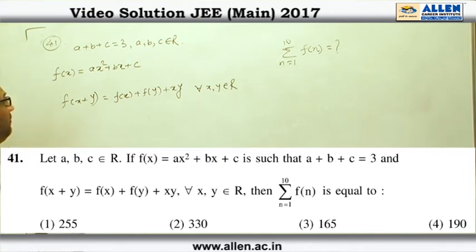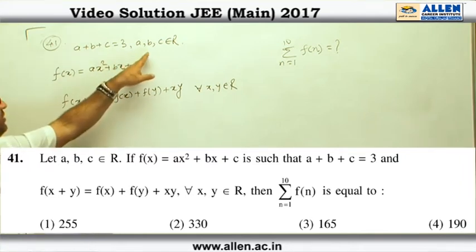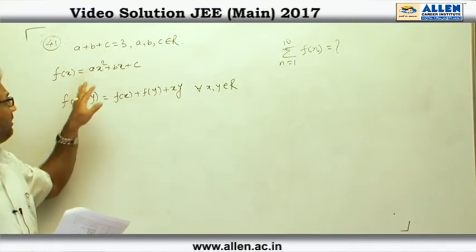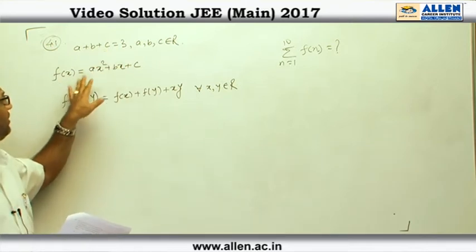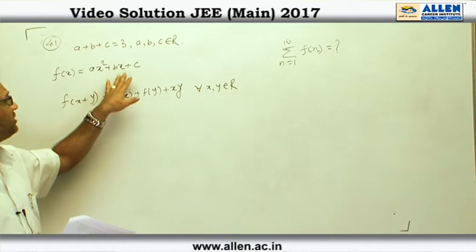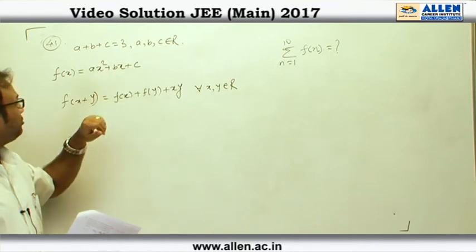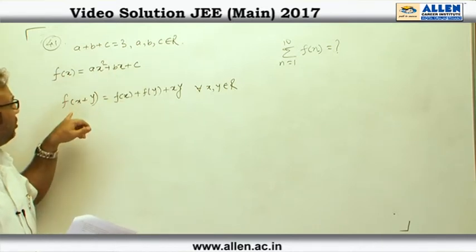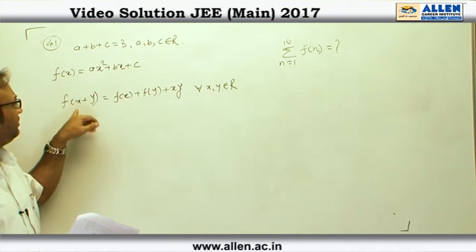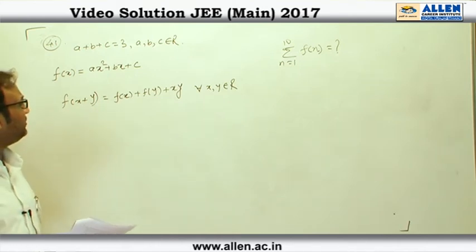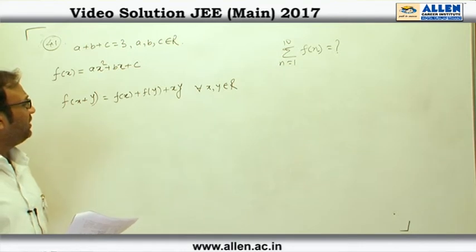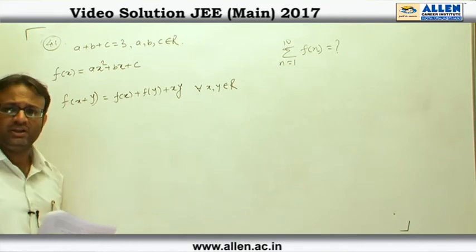In question number 41, we are given 3 real numbers a, b, c whose sum is 3. Then there is a quadratic defined here: f(x) = ax² + bx + c. Moreover, it is told to us that f always satisfies this relation. This is a functional rule: f(x+y) = f(x) + f(y) + xy for all real numbers.